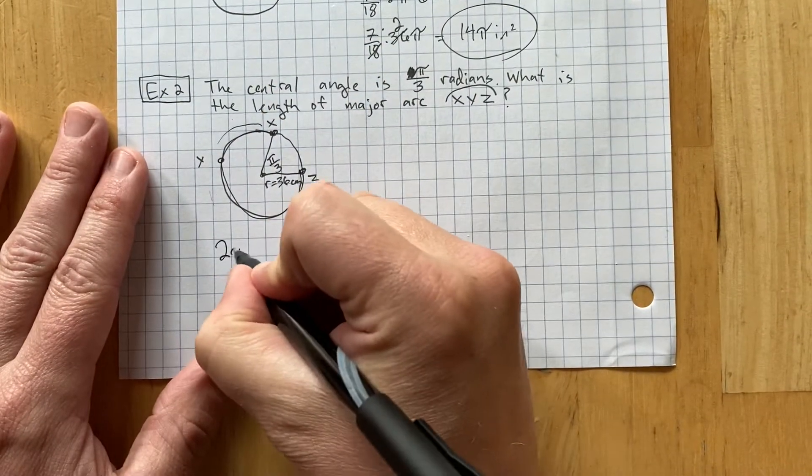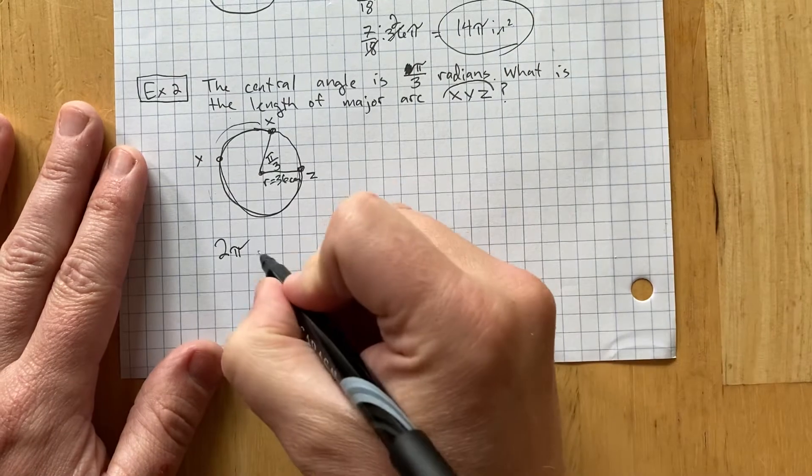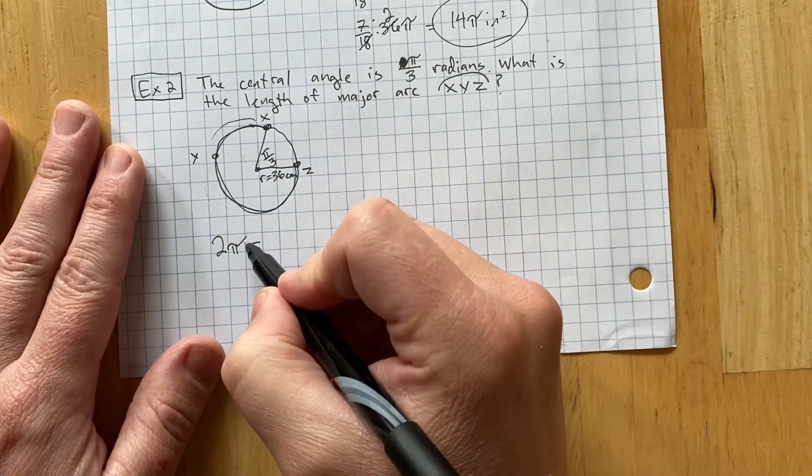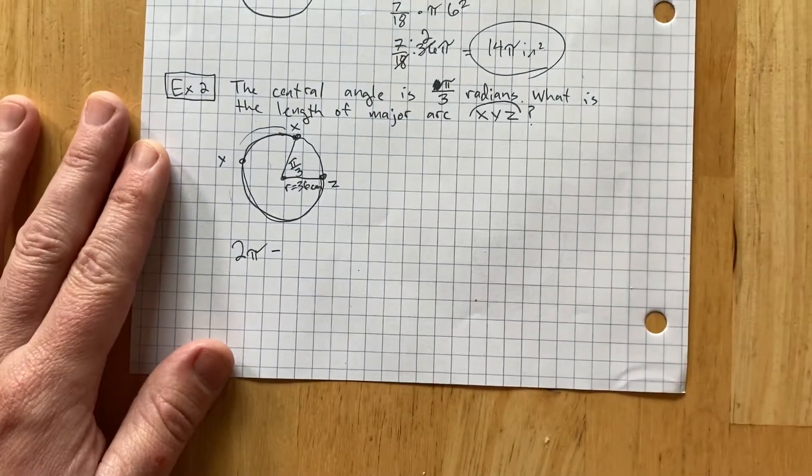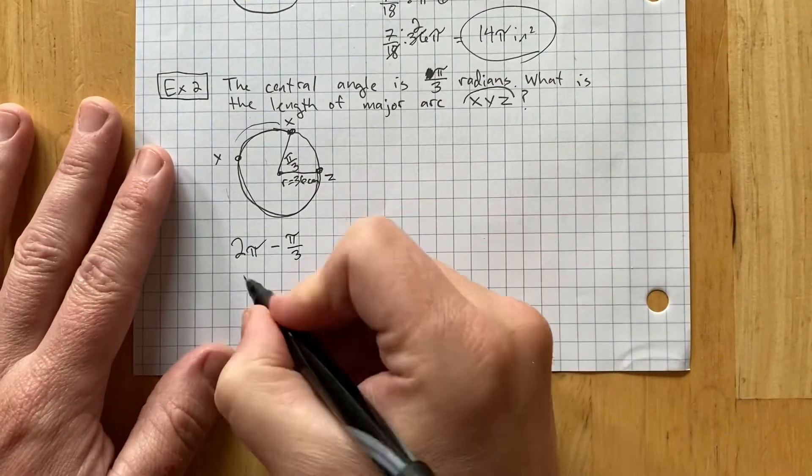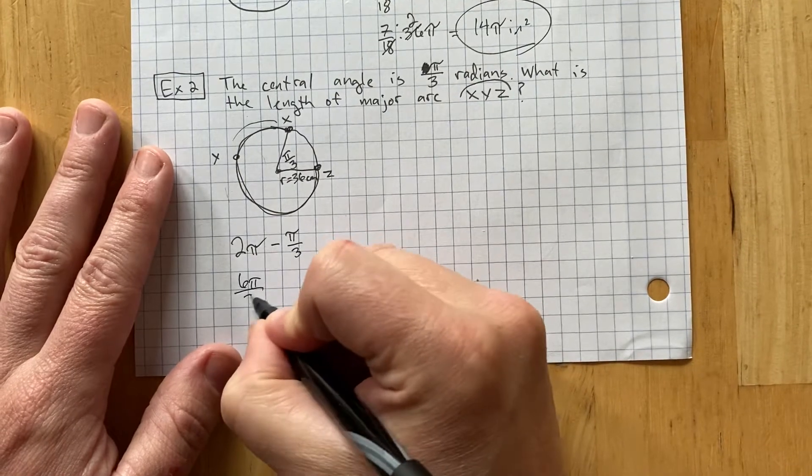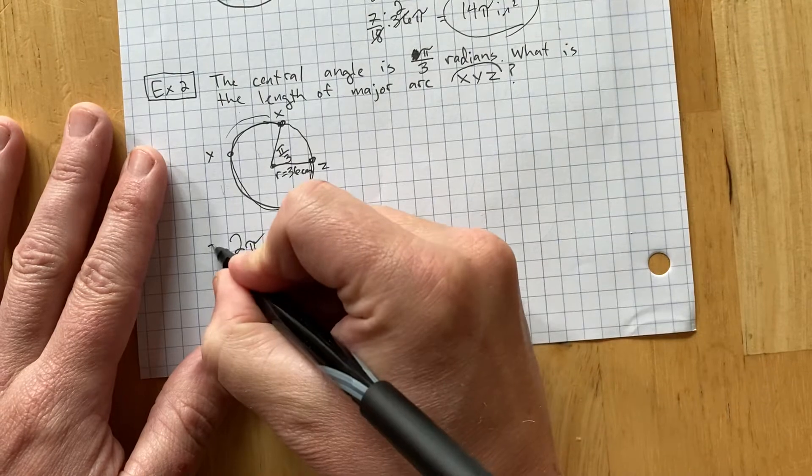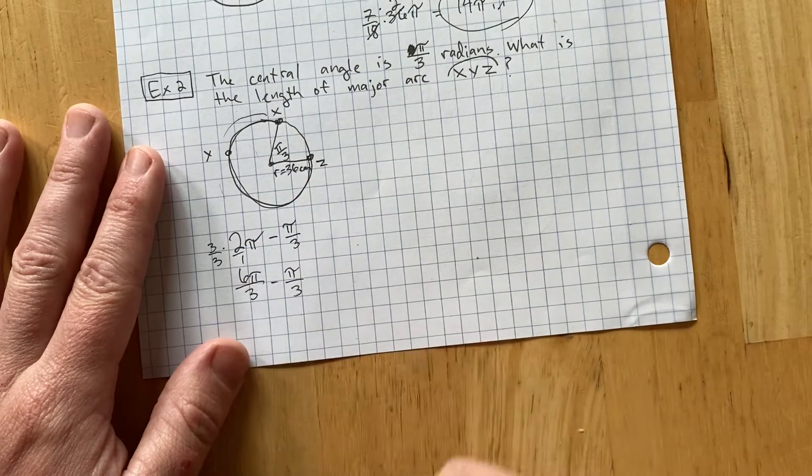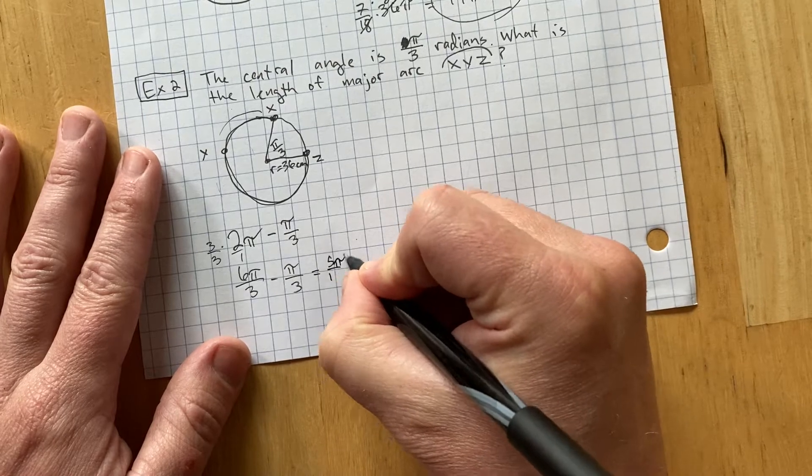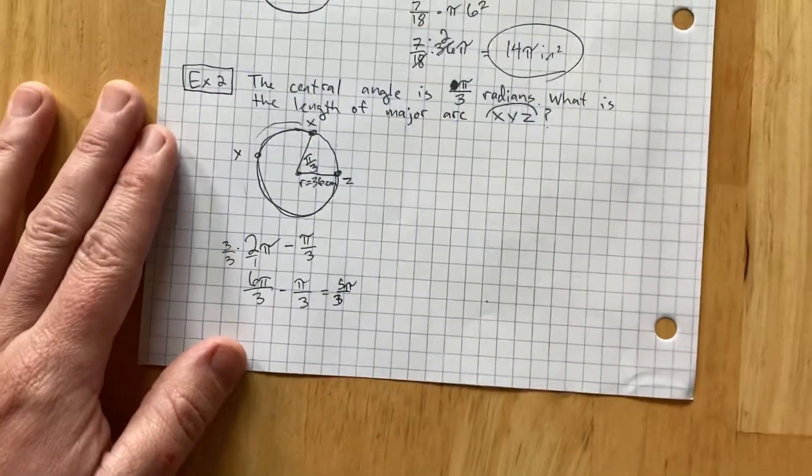Remember that there are 2 pi radians in the entire circle. We would normally do 360 minus this number. But now, I'm going to do 2 pi minus that number. And so, 2 pi minus pi over 3. That's the same as 6 pi over 3 minus pi over 3. I just multiplied this by 3 over 3. And now, I can get 5 pi over 3 is that central angle.